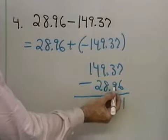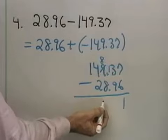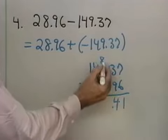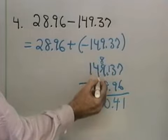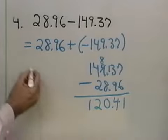6 from 7 is 1. 9 from 3 I can't do, so I borrow 1 here. That makes that 13. 9 from 13 will be 4. 8 from 8 is 0. 2 from 4 is 2. And 0 from 1 is 1. So, I get 120.41.